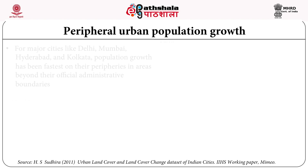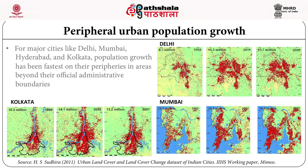There was also peripheral urban population growth. For major cities like Delhi, Mumbai, Hyderabad, and Kolkata, population growth has been fastest in their peripheries, in areas beyond their official administrative boundaries. The peripheral areas have grown much more than the areas within the urban local body, for various metropolitan cities and mega cities.